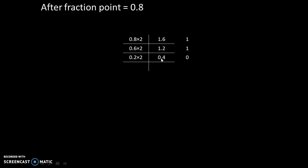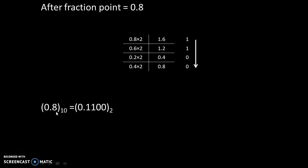We write 0. And 0.4 multiplied by 2 gives us 0.8. We will do it for only 4 iterations — that's enough. Writing down our answer in order: 1 1 0 0. So, 0.8 to the base 10 is equivalent to 0.1 1 0 0 to the base 2.